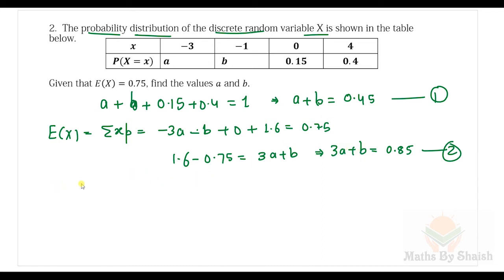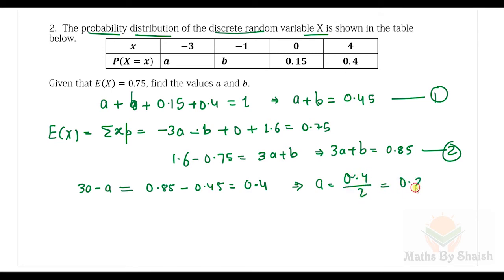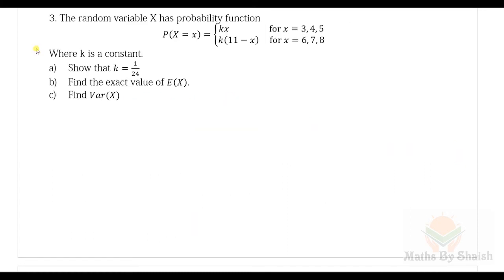Subtracting equation one from equation two: (3a + b) − (a + b) = 0.85 − 0.45, so 2a = 0.4, giving a = 0.2. Substituting back into equation one: b = 0.45 − 0.2 = 0.25. So a = 0.2 and b = 0.25.